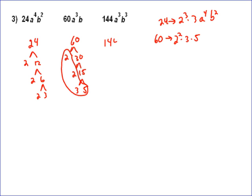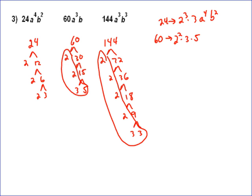And then finally, 144 is, well, 2 times 72. This is going to take us a bit. 2 times 36, 2 times 18, lots of 2's in this one. 2 times 9, and then 9 is 3 times 3. So that's the prime factorization. There are 4 2's and 2 3's.